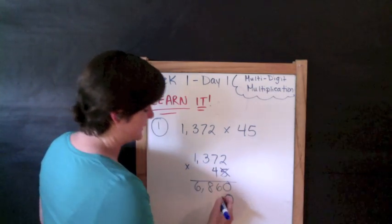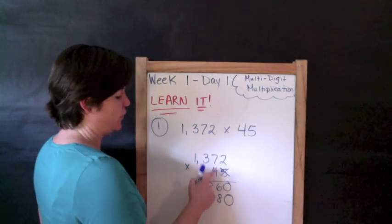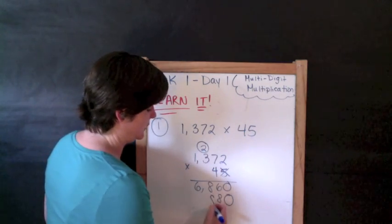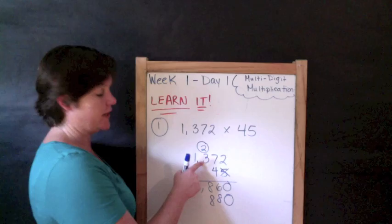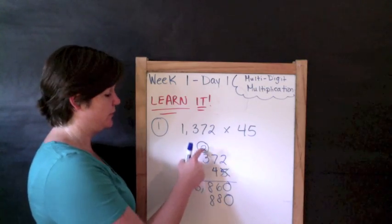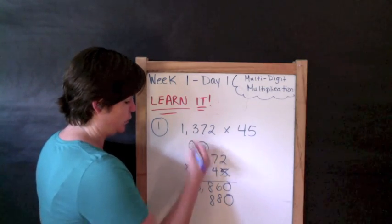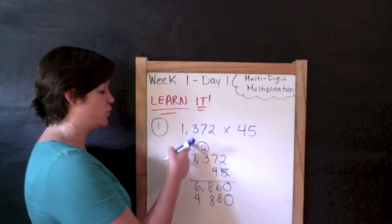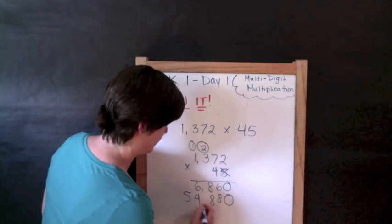Four times two is eight. Four times seven is twenty-eight. Four times three is twelve, and twelve plus two is fourteen. Four times one is four, plus one is five.